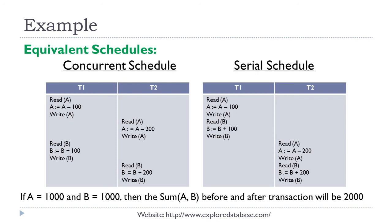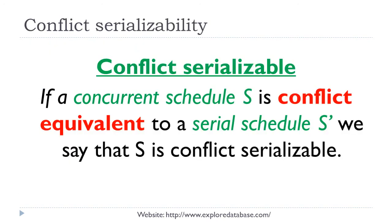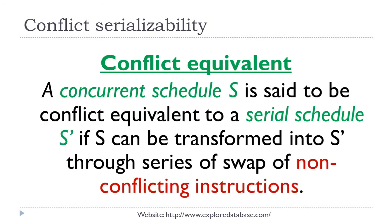Now let us discuss about conflict serializability. We can say a concurrent schedule is conflict serializable if it is conflict equivalent to a serial schedule. A concurrent schedule is said to be conflict equivalent to a serial schedule if we are able to convert the concurrent schedule into a serial schedule through a series of swapping of non-conflicting instructions.